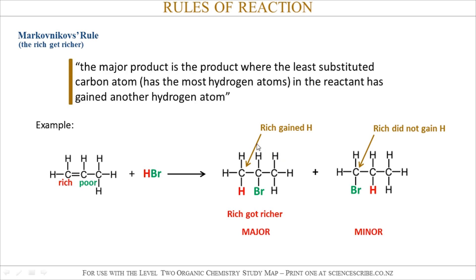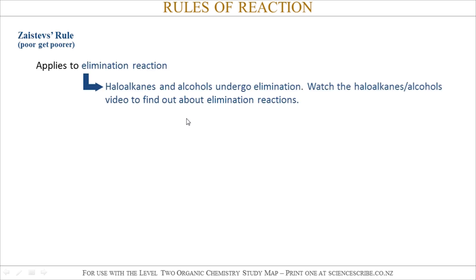You wouldn't just write 'rich get richer' in an assessment — you'd have to use wording that's more appropriate. 'Rich get richer' is just a way to help you remember the rule. So you'd say something like: the major product is the product with the least substituted carbon atom (which has the most hydrogen atoms), and the reactant has gained another hydrogen atom.